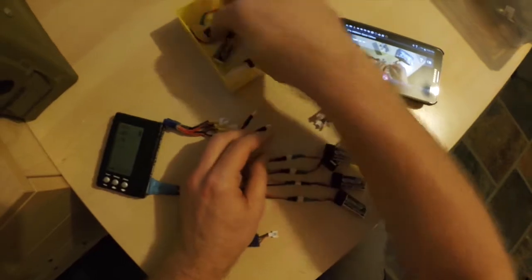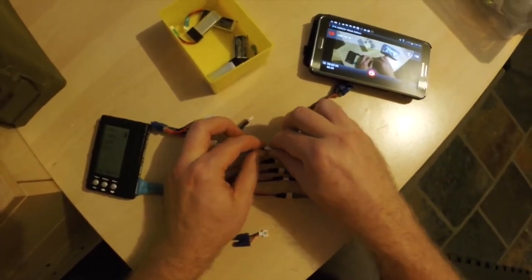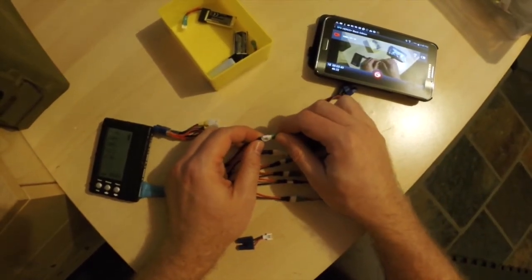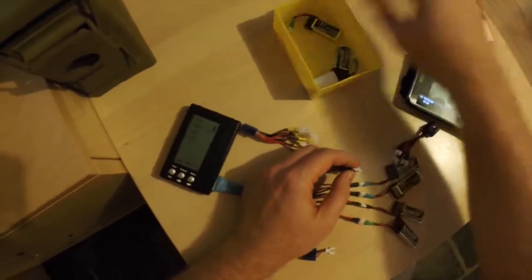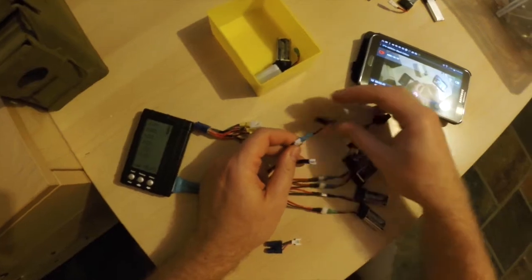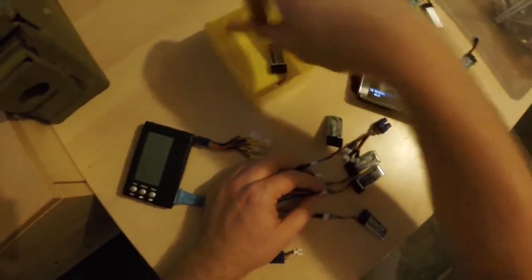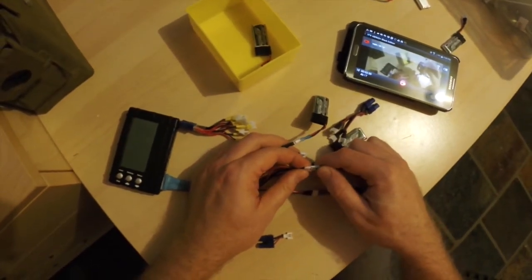So let's do some parallel charging. Here it's very important that you have cells with a very similar voltage. So I'm just digging out a few with around 3.8 volts again. Because if you connect cells with different voltages together in parallel they will charge and discharge themselves and that's not good.